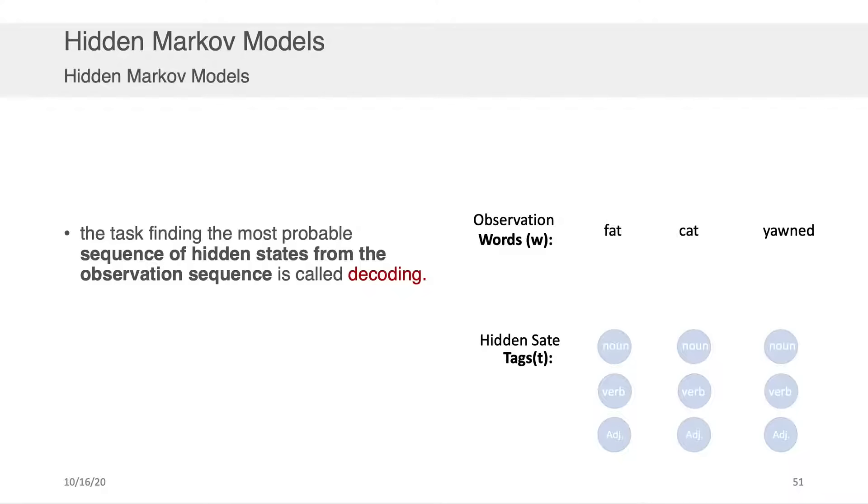Now once you have the observations and you have the states and the transition probabilities between the states, which could come from some training data for example, the task of finding the most probable sequence of hidden states from the observation sequence is called decoding.